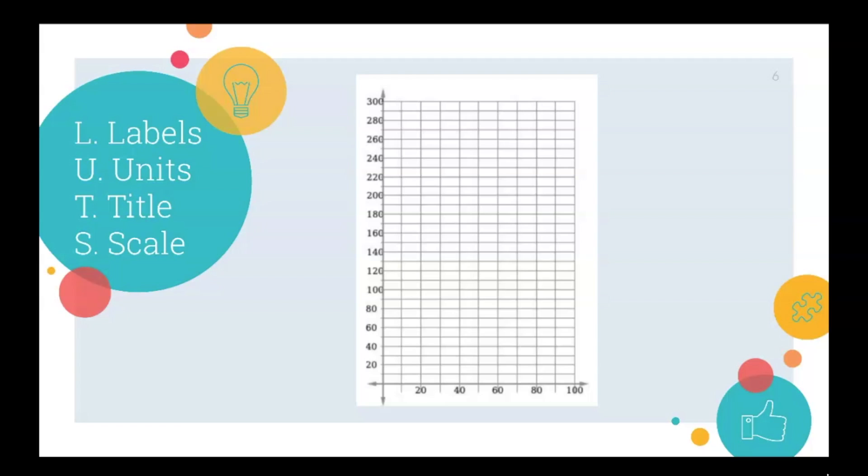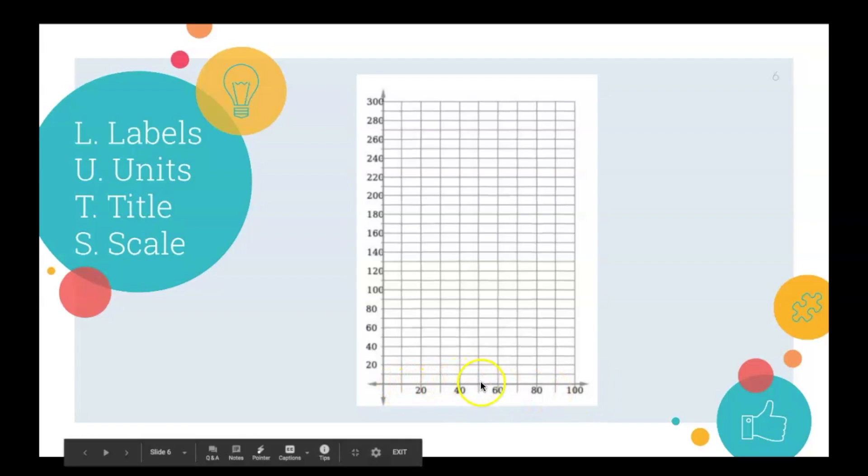So we want the students to title the X and Y axis. We want them to understand what units are being used, as well as the scale. So here we can start to introduce them to terms such as domain and range. The domain would be the X values and in this case you're trying to think about how many problems Jenny and Gennaro could possibly work. So on this graph we are using up to 100 and if we look at the scale this is in increments of 10.